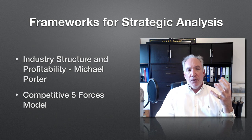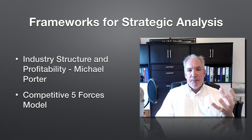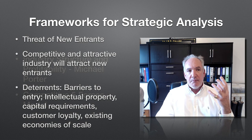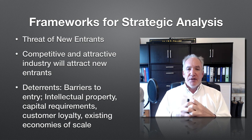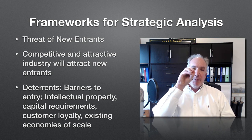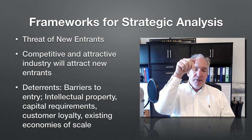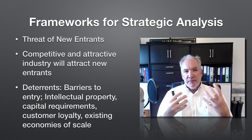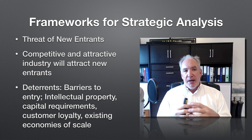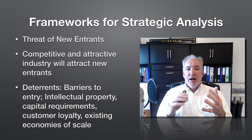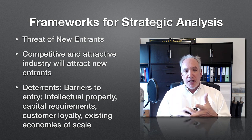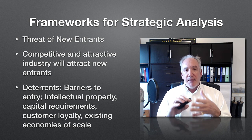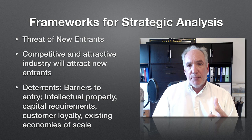Michael Porter also has a five forces model, which looks at the industry structure and its competitiveness. The first force is the threat of new entrants. If the market is attractive and competitive, it will attract new entrants coming in and taking market share and disrupting the market. However, if there are barriers to entry such as intellectual property rights, high capital requirements, strong customer loyalty, or existing economies of scale, it makes it much more difficult for new entrants to come into the market.